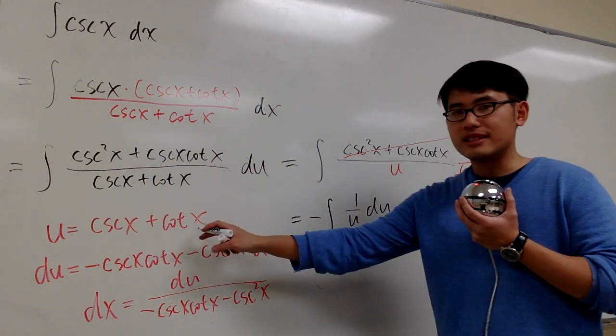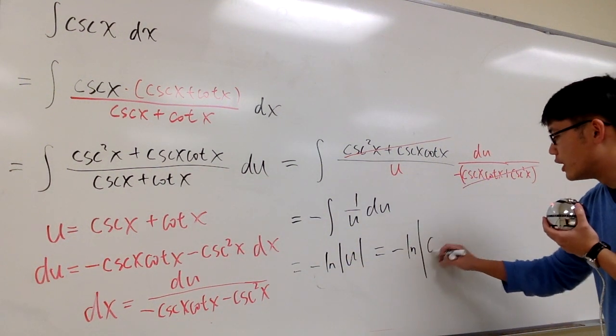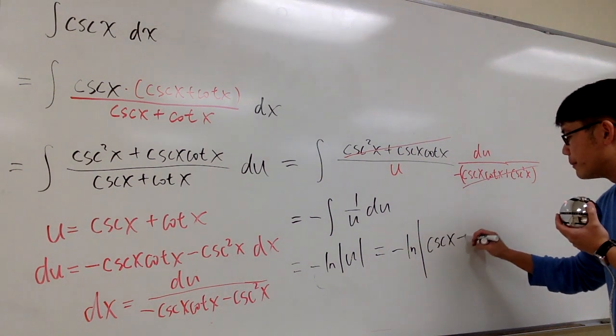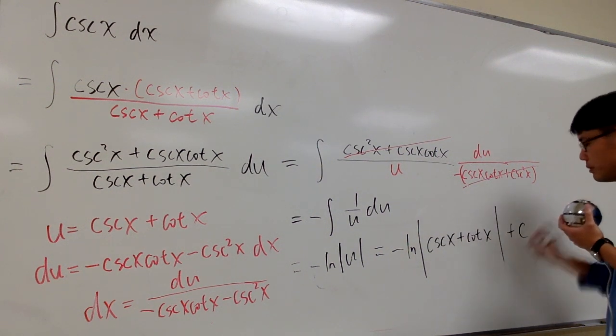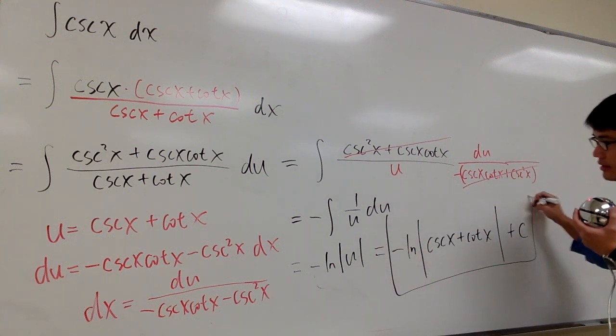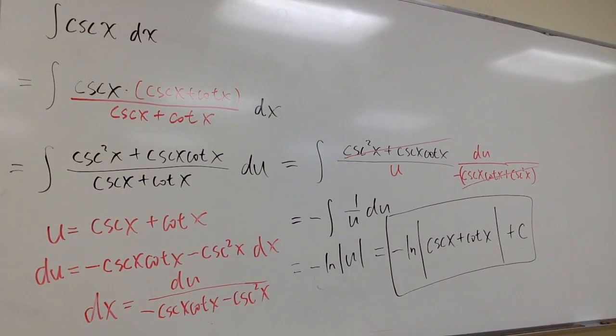And then u is what? U is that. So, we are done. Negative ln absolute value of cosecant x plus cotangent x. And then don't forget to put a plus c. Box the answer. And then get ready for the next one.